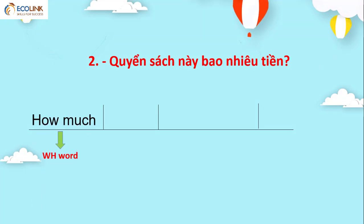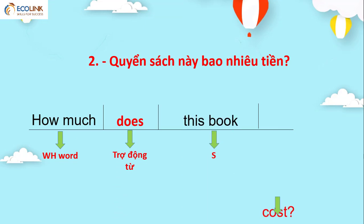How much does this book cost? Với chủ ngữ 'quyển sách này' là số ít, vì vậy ta dùng trợ động từ 'does'. How much does this book cost?